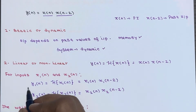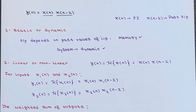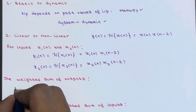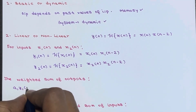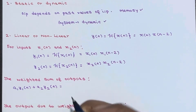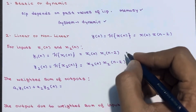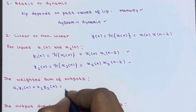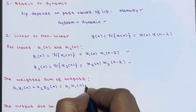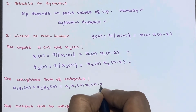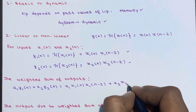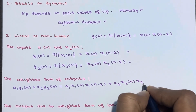Now we calculate the weighted sum of outputs: a1·y1(n) + a2·y2(n) = a1·x1(n)·x1(n-2) + a2·x2(n)·x2(n-2).